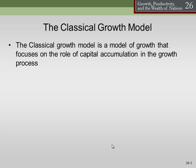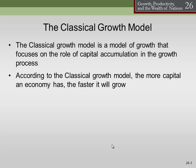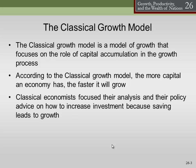A classical growth model is a model of growth that focuses on the role of capital accumulation in the growth process. As we accumulate more capital, we have more tools, more factories, more stuff to make stuff, and therefore we can make more stuff. According to the classical growth model, the more capital an economy has, the faster it will grow. Classical economists focus their policy advice on how to increase investment because savings leads to growth.